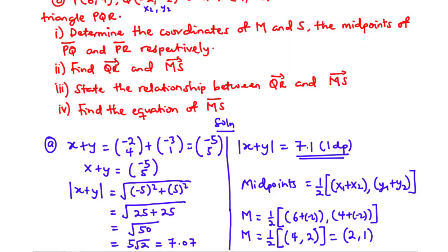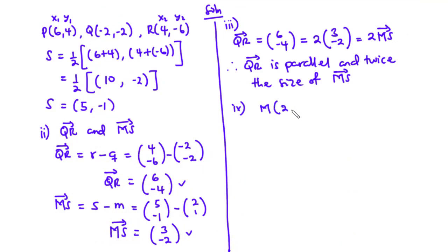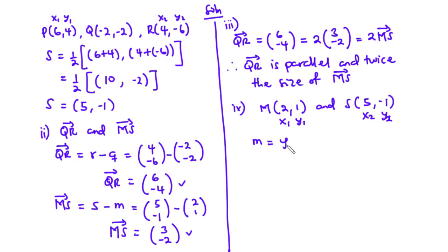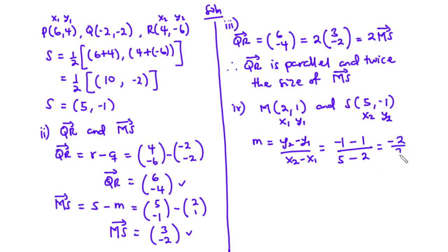For part iv, we find the equation of line MS. The coordinates of M are (2, 1) and coordinates of S are (5, -1). Taking M as (x₁, y₁) and S as (x₂, y₂), the gradient m = (y₂ - y₁)/(x₂ - x₁) = (-1 - 1)/(5 - 2) = -2/3. So the gradient is -2/3.